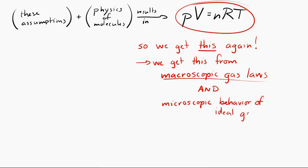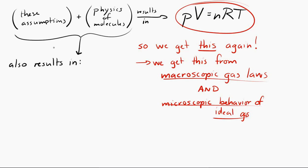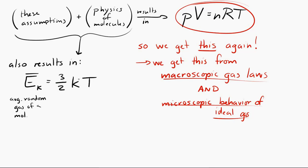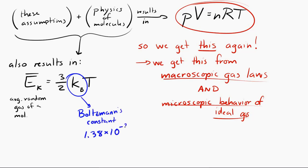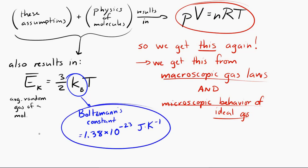Another result from the kinetic model of an ideal gas is an equation for the average random molecular kinetic energy: the average random kinetic energy of a molecule in an ideal gas is equal to 3/2 K_B T. K_B is known as Boltzmann's constant, equal to 1.38 × 10⁻²³ joules per kelvin. That's a pretty important constant in physics and pops up in various places.